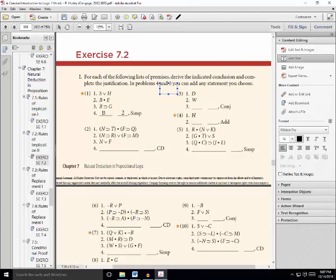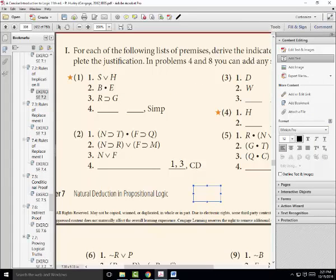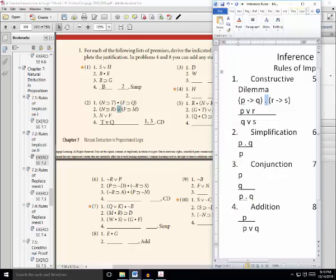Next example asks us to use constructive dilemma. So we need a conjunction of two conditionals, and then we need a disjunction where the disjuncts are the antecedents of the two conditionals. Where do we find that? Here it is with lines one and three. So the conclusion we're supposed to draw is either T or Q. The consequence of our two conditionals come down. Remember, you can't use line two. How come we can't use line two? There's a wedge as the main operator instead of a dot.